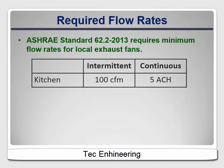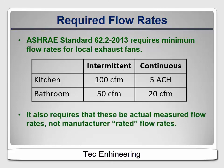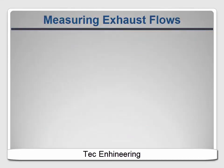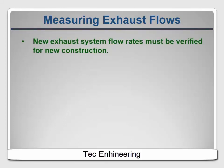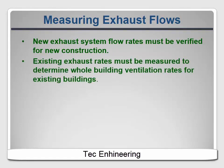For bathrooms, intermittent fans must provide at least 50 CFM; continuous systems must provide at least 20. The standard also includes another important requirement: these must be the actual measured system flow rates, not the manufacturer ratings for the fans, since delivered flow rates are often well below the rated flows. ASHRAE 62.2 requires measurement of exhaust system flow rates for numerous purposes. In new construction, testing is necessary to ensure that the installed systems meet the required rates. In existing buildings, the flow rates of the existing fans are used to determine how much mechanical ventilation is needed.